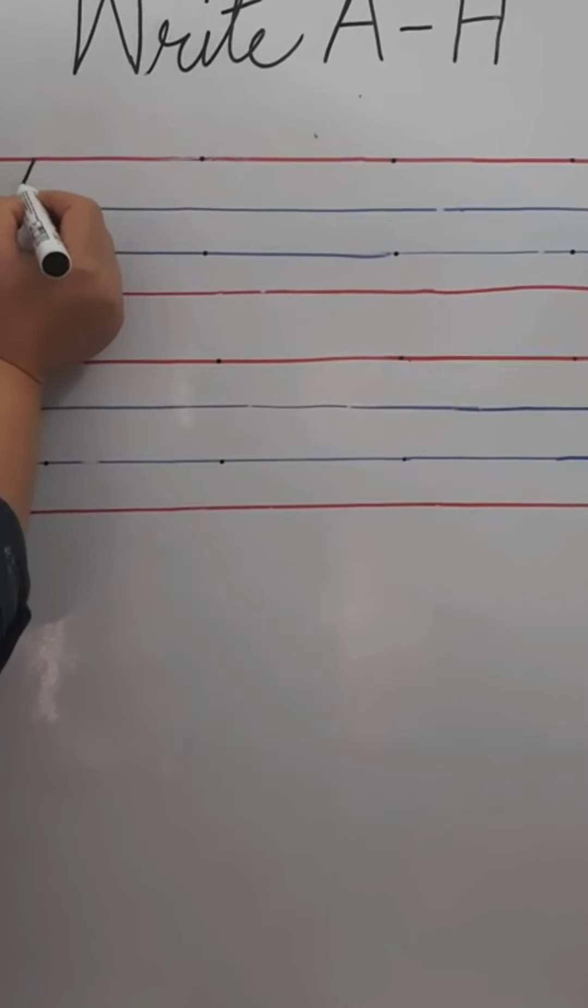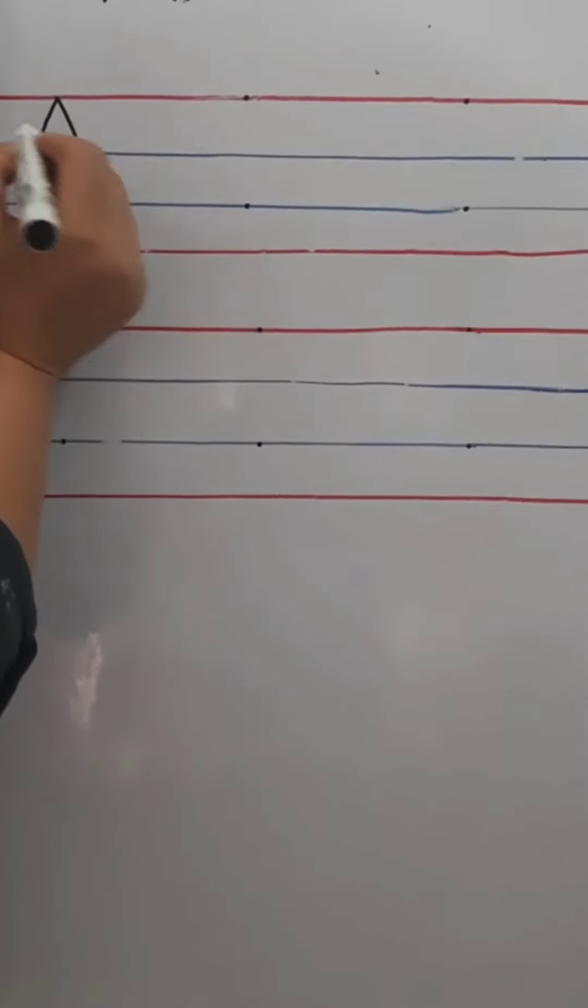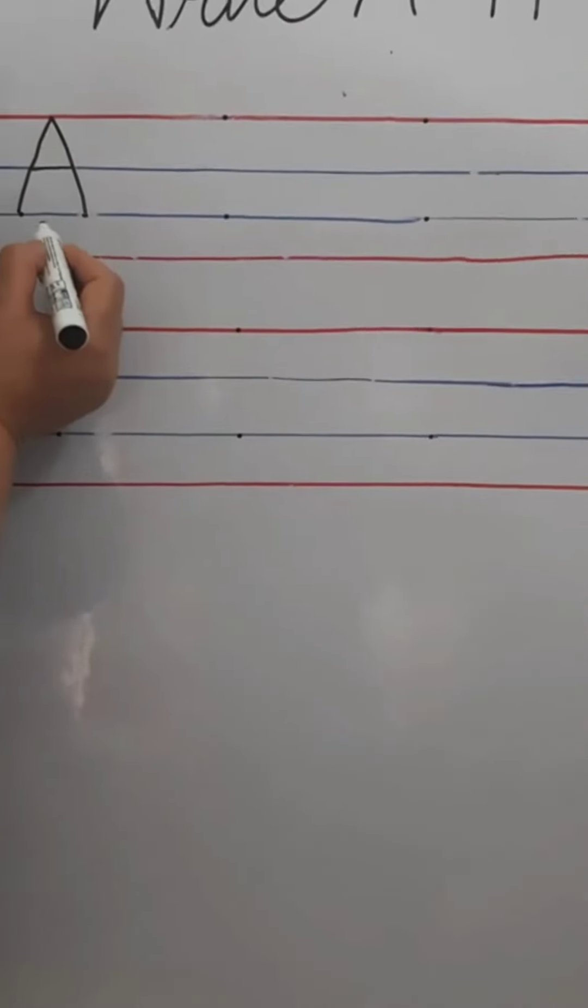And make one slanting line. Again one slanting line. And one sleeping line. This is letter A.